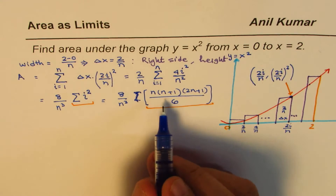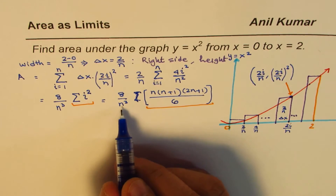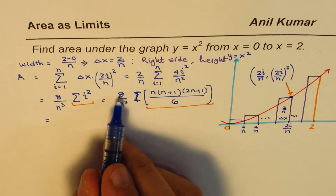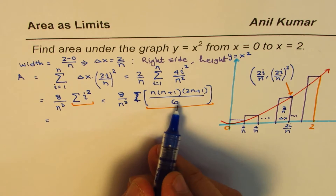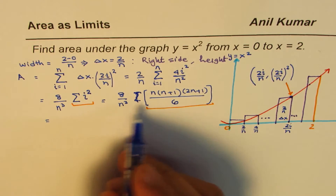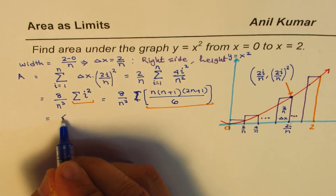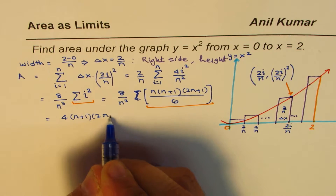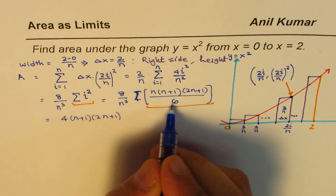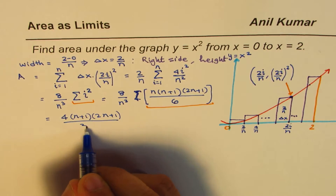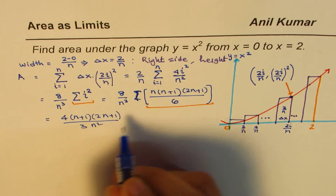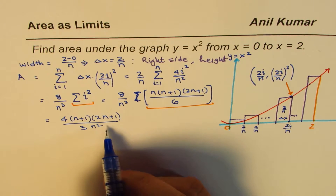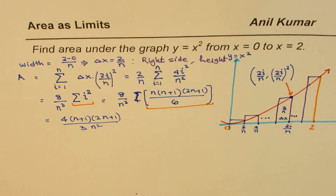Now we simplify: the n in the numerator cancels one n from n³, leaving n², and 8/6 simplifies to 4/3. So the expression becomes (4/3) × (n+1)(2n+1)/n².